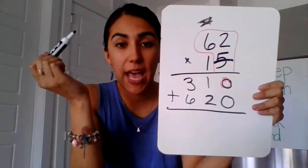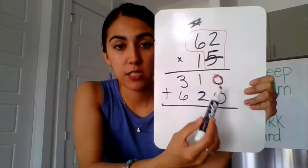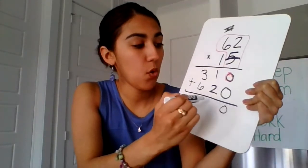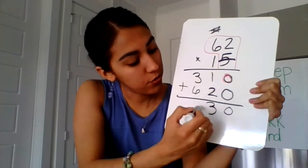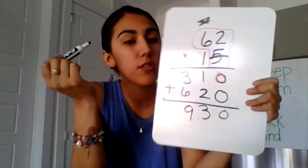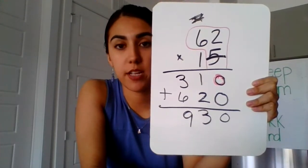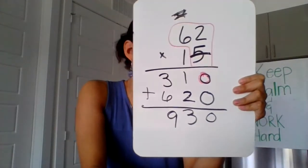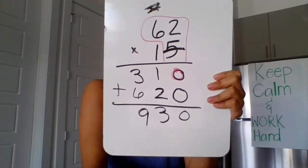And then we're going to add those two partial products, starting in the lowest place value. 0 plus 0 is 0. 1 plus 2 equals 3. And 6 plus 3 equals 9. The product of 62 times 15 equals 930.